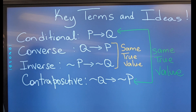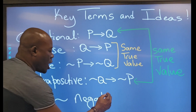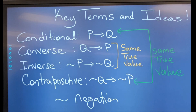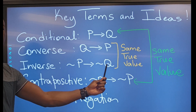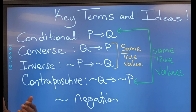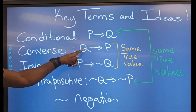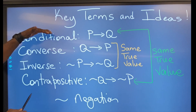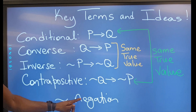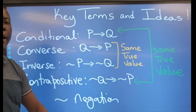This symbol here is our negation, which means 'not.' So in our inverse it reads 'if not p then not q,' because this symbol is the negation of the original statement. The contrapositive is actually the negation of the converse — we flip around our original statement to get the converse and then negate it, so it reads 'if not q then not p.' That is our contrapositive.